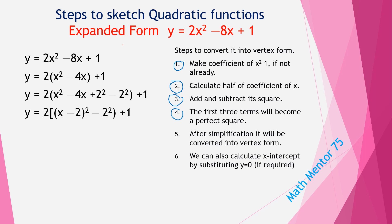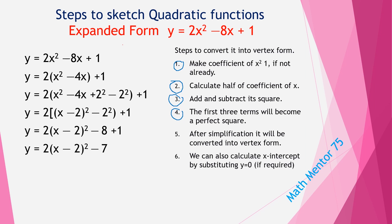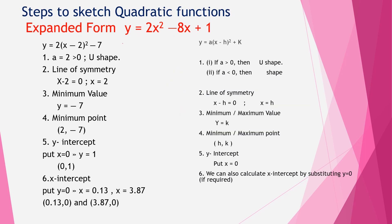The first three terms give us (x − 2)² minus 2². After simplification — opening brackets and doing simple mathematics — we have our vertex form. Using the knowledge from our previous lesson, we can now sketch the curve.